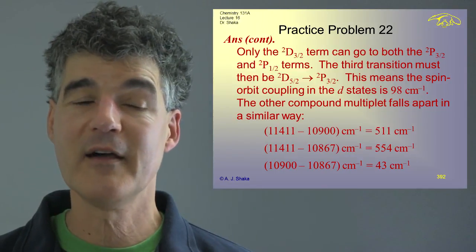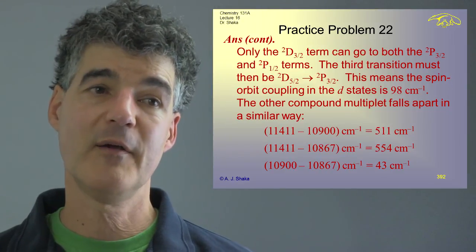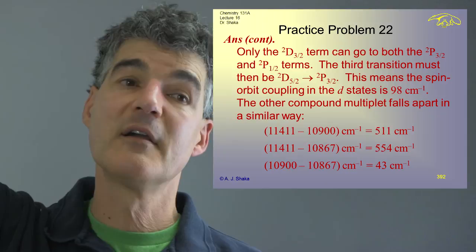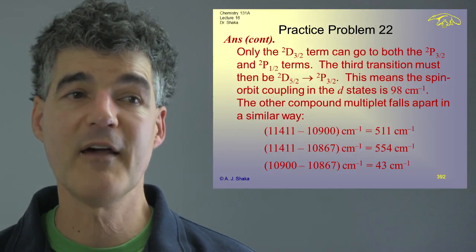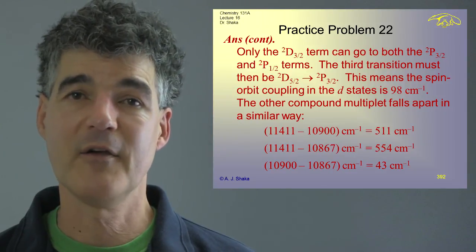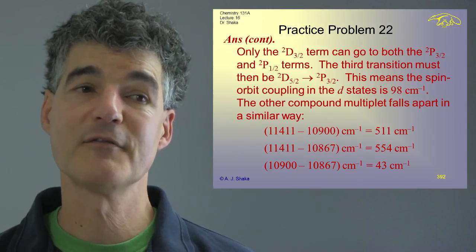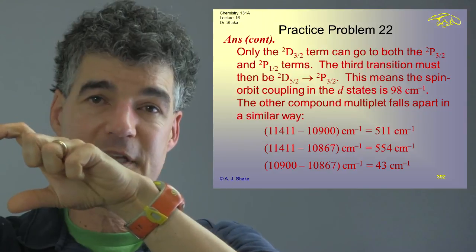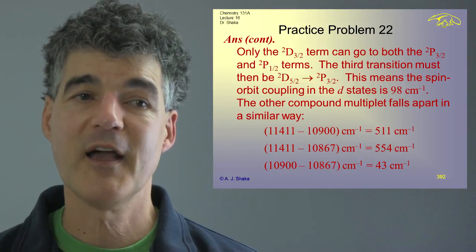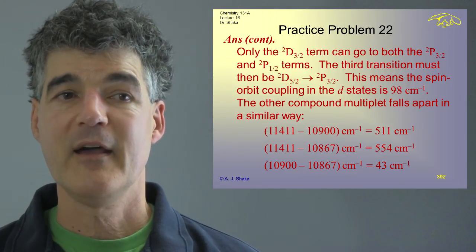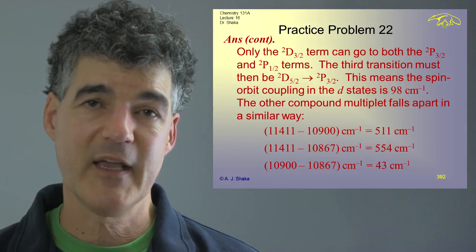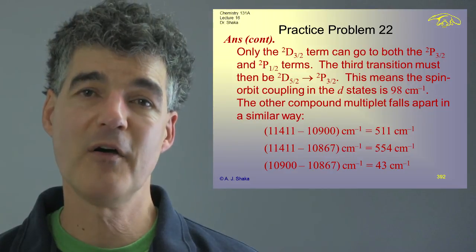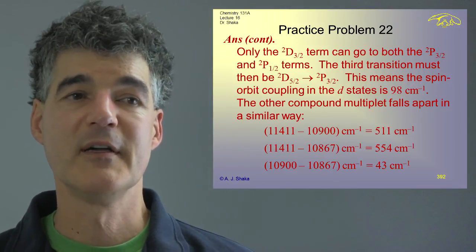Let's do the same with the other set of three. They must be from another D state higher in energy coming down. Taking 11,411 minus 10,900 gives 511 — not seen that. But 11,411 minus 10,867 gives 554 — bingo. There is a level again coming down to those two P states. The third difference gives a splitting of 43. The 554 is the spin-orbit splitting in the P state; I expect the D state splitting to be lower than that. So I'll assume the small value is the splitting in the D state.